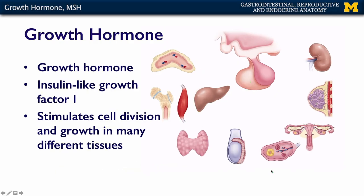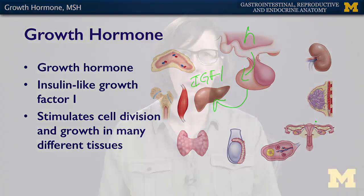So growth hormone acts along a chain: from the hypothalamus to the anterior pituitary, growth hormone travels to the liver, and then IGF-1 goes out and affects all kinds of other tissues in the body. That is the main way that growth hormone can stimulate growth.